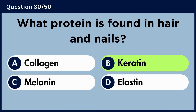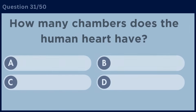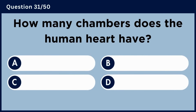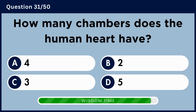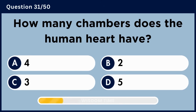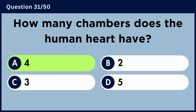How many chambers does the human heart have? Answer A: 4.